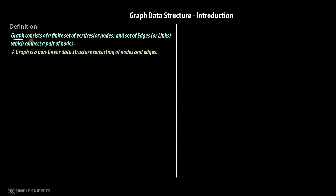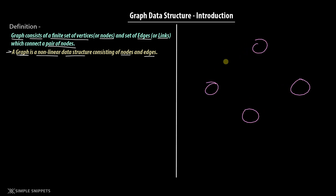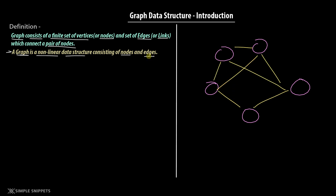According to the definition, a graph consists of a finite set of vertices or nodes, and a set of edges or links, also known as paths, which connects a pair of nodes. In simple terms, a graph is a non-linear data structure consisting of nodes and edges. This sounds like a definition related to tree data structure, so let me quickly draw a graph according to the definition.